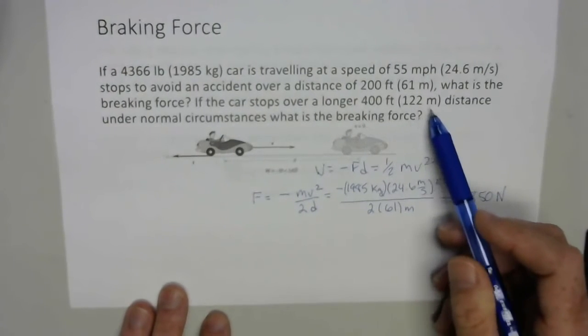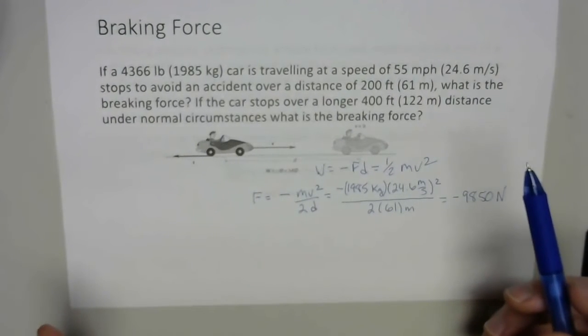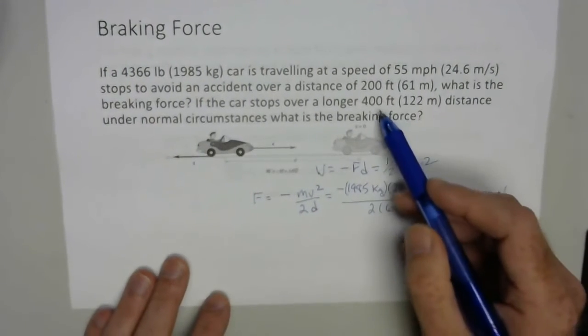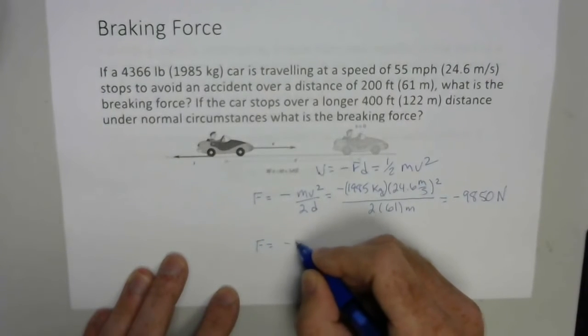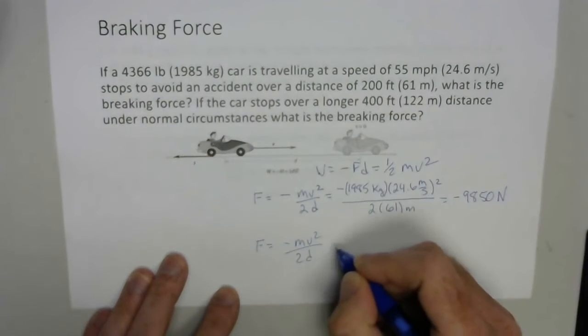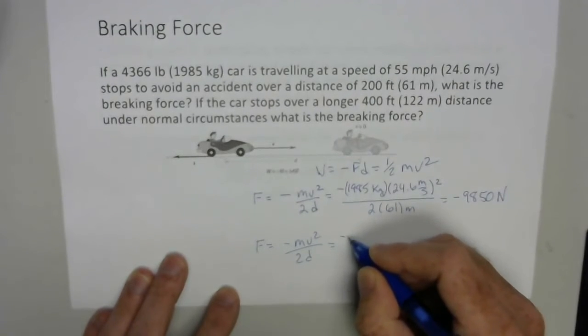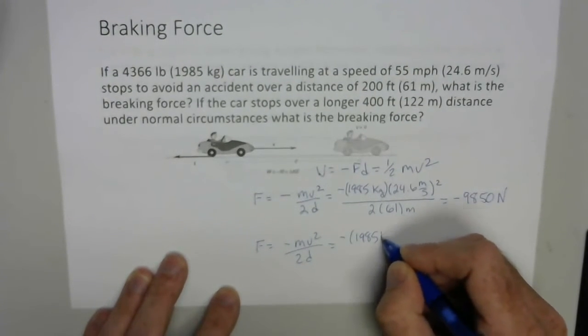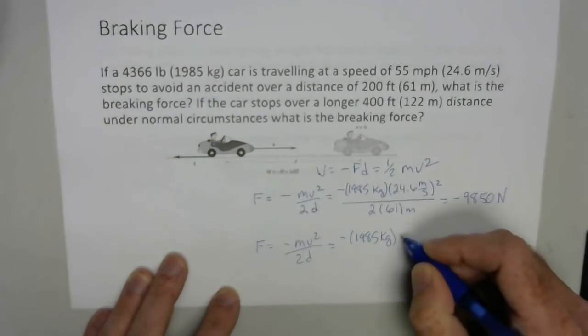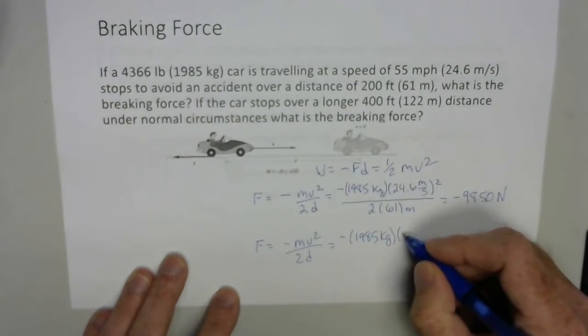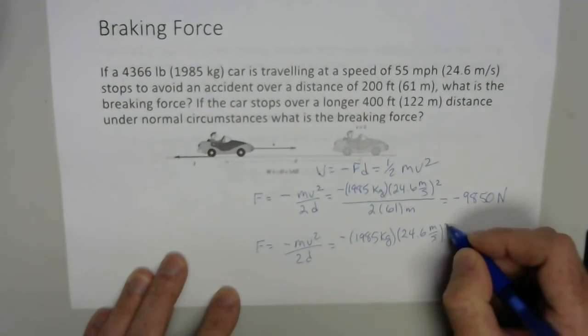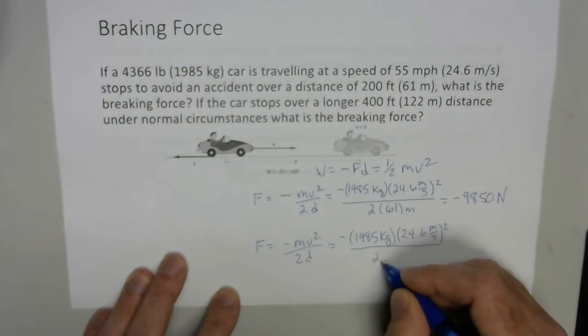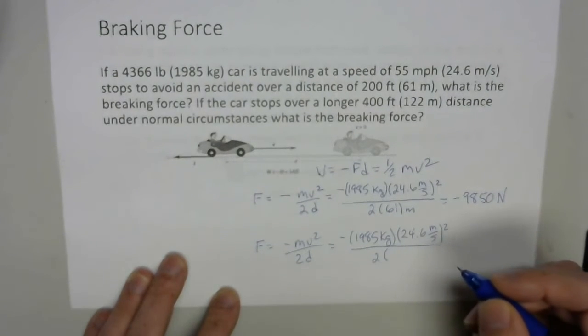Second part is if I stopped over a little bit longer distance, what would be the braking force? So 400 feet or 122 meters. So essentially, it's just the same calculation again. Same mass on the car, but I'm stopping over a longer distance. So the kinetic energy change is the same, but the force applied needs to be less because I'm stopping over a larger distance and I don't need as much force.